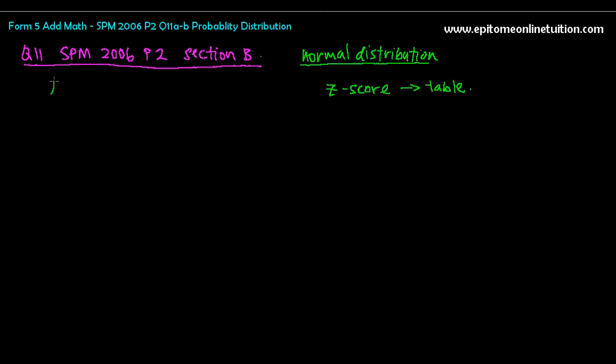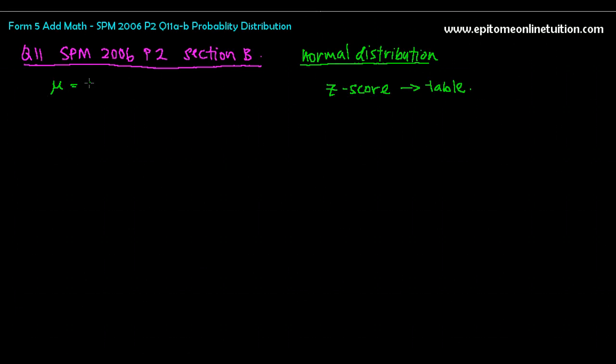So mean in this case, the symbol is mu. This is called a mu. The mean is 5.8. A lot of students confuse this with the statistics mean. The statistic mean is X. And this is different, because this is probability and not statistics. Mean is 5.8 and a standard deviation with the same symbol is 1.5. Now let's look at question one by one for A.